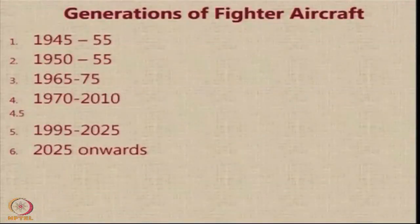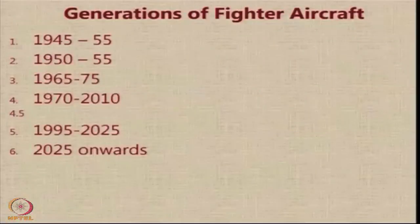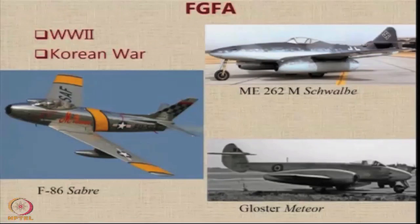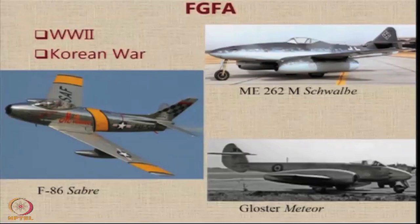When we look at aircraft data, there are so-called generations of fighter aircraft: first, second, third, fourth, 4.5 generation, and so on. We are now looking at fifth-generation aircraft, and aircraft coming after 2025 will be called sixth-generation. Under first-generation fighter aircraft, prominent during the Second World War and the Korean War, famous examples include the F-86 Sabre, the Messerschmitt Me 262 Schwalbe, and the Gloster Meteor.